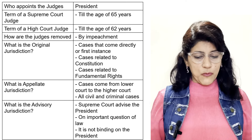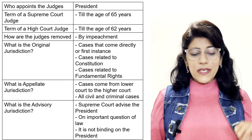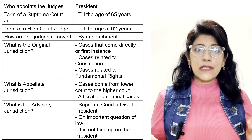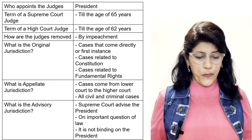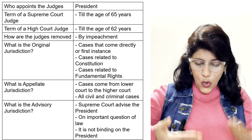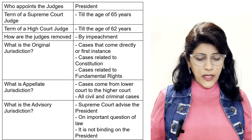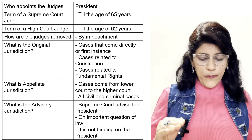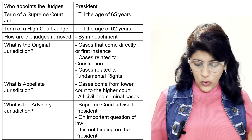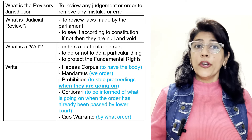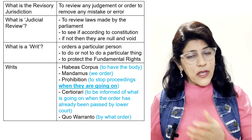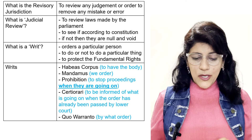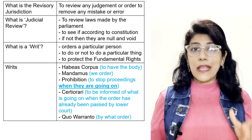How are judges removed? By impeachment — the same procedure as for the President. What is original jurisdiction? Cases that come directly or first instance — cases related to the Constitution and cases related to fundamental rights. What is appellate jurisdiction? Cases from the lower court to the higher court — all civil and criminal cases. What is advisory jurisdiction? The Supreme Court advises the President on important questions of law, but it is not binding on the President. What is review jurisdiction? To review any judgment or order and to remove any mistake or error in the judgment.